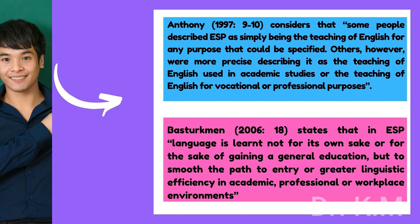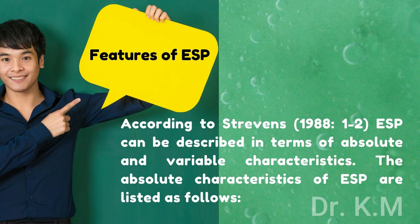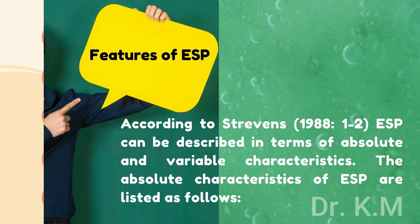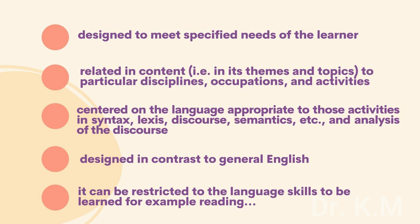Features of ESP. According to Strevens (1988, pp. 1-2), ESP can be described in terms of absolute and variable characteristics. The absolute characteristics of ESP are listed as follows: 1. Designed to meet specified needs of the learner. 2. Related in content — that is to say, in its themes and topics — to particular disciplines, occupations, and activities. 3. Centered on the language appropriate to those activities in syntax, lexis, discourse, semantics, etc., and analysis of the discourse. 4. Designed in contrast to general English. 5. It can be restricted to the language skills to be learned, for example reading.